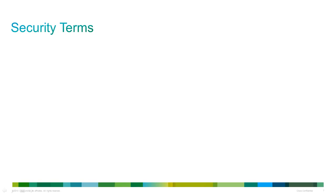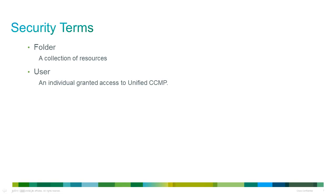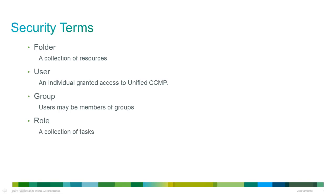In the security model, a folder contains other resources and is the basic building block of the model. A user in this context is not an agent provisioned by Unified CCMP, but is an individual who has access to the Unified CCMP user interface. They will be a member of a group or sometimes more than one group, and their permissions are constrained by their roles. Within a role, the permissible actions are defined by the available tasks.